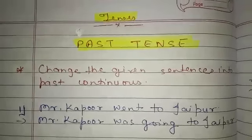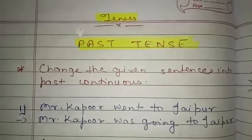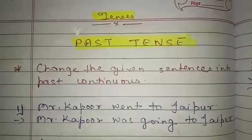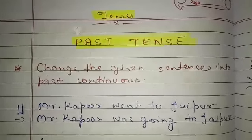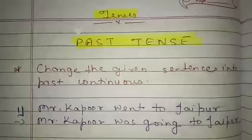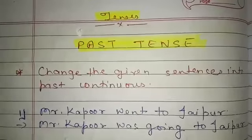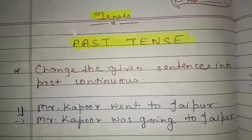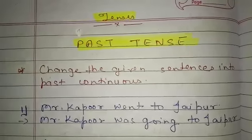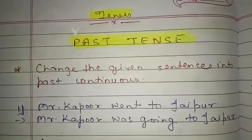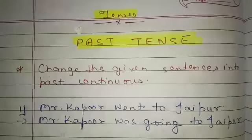Good morning children. Today we will see how to change sentences into past continuous tense. At first let me tell you what is the structure of past continuous tense: Subject plus was or were plus V4 plus object.